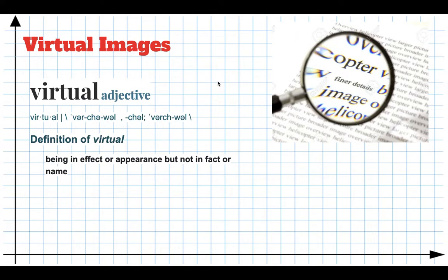So far, we've been looking at real images. Real images are images that are formed when light rays actually reconverge. And the last kind of image we're going to look at is called a virtual image. So first of all, let's talk about what the word virtual means.